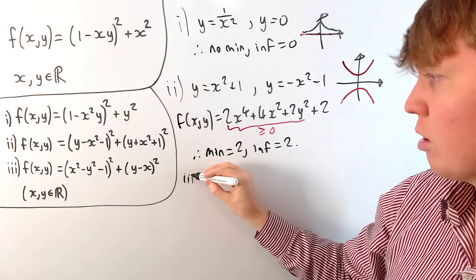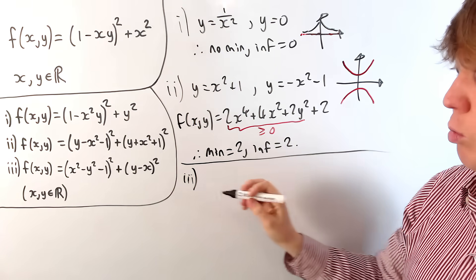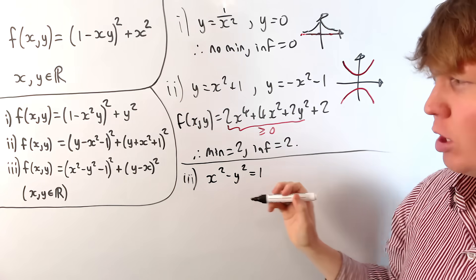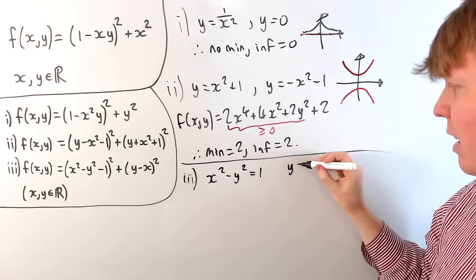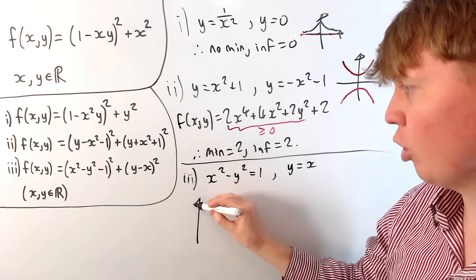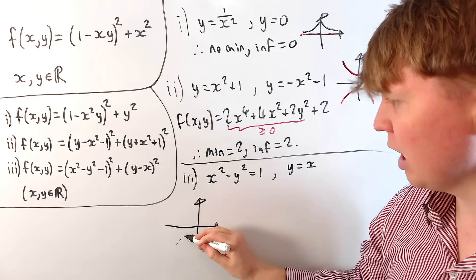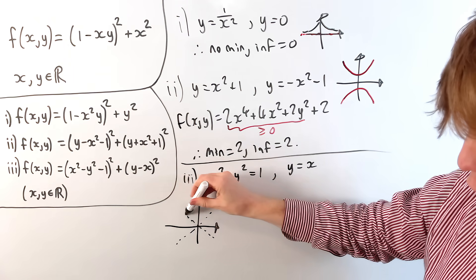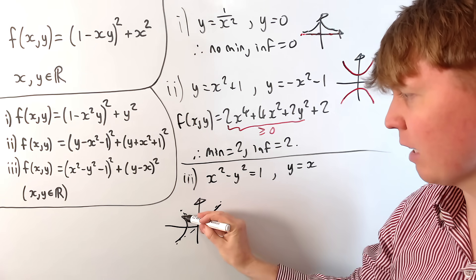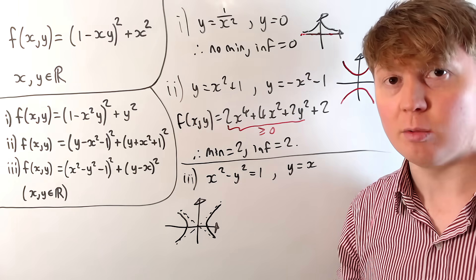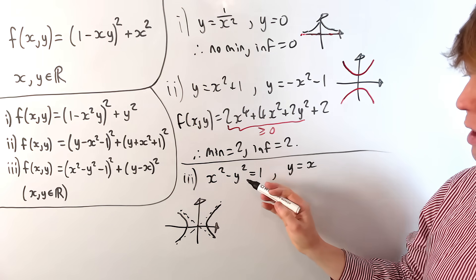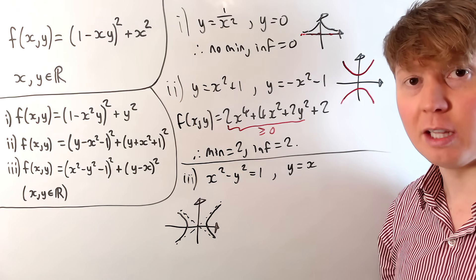So this didn't work like our first example, because these two sets where each squared term equals 0 don't get anywhere near each other, and they also don't overlap. Now let's look at the third example. For the first squared term to be 0, we need x² - y² = 1. For the second term, we need y = x. We can understand this more geometrically: x² - y² = 1 is the equation of a hyperbola, which has asymptotes at y = x and y = -x, getting closer and closer to these lines as x and y go to infinity. But these two zero sets never actually intersect, so it's not possible to have y = x and x² - y² = 1 simultaneously — you just get 0 = 1.